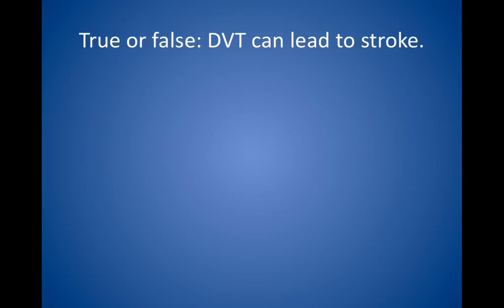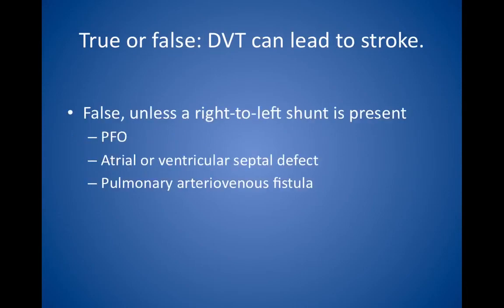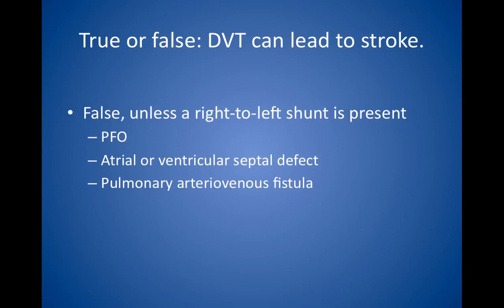True or false: DVT can lead to a stroke. False, with one rare exception. Embolization of left-sided heart clots because of atrial fibrillation, ventricular wall aneurysm, severe congestive heart failure, or endocarditis causes arterial infarcts, stroke, and renal, GI, or extremity infarcts — not PEs. DVTs or right-sided heart clots that embolize cause PEs, not arterial emboli. The exception is the patient with a right-to-left shunt, such as a patent foramen ovale, atrial or ventricular septal defect, or pulmonary arteriovenous fistula. In such a patient, a venous clot may embolize and cross over to the left side of the circulation, causing an arterial infarct. This event is quite rare.